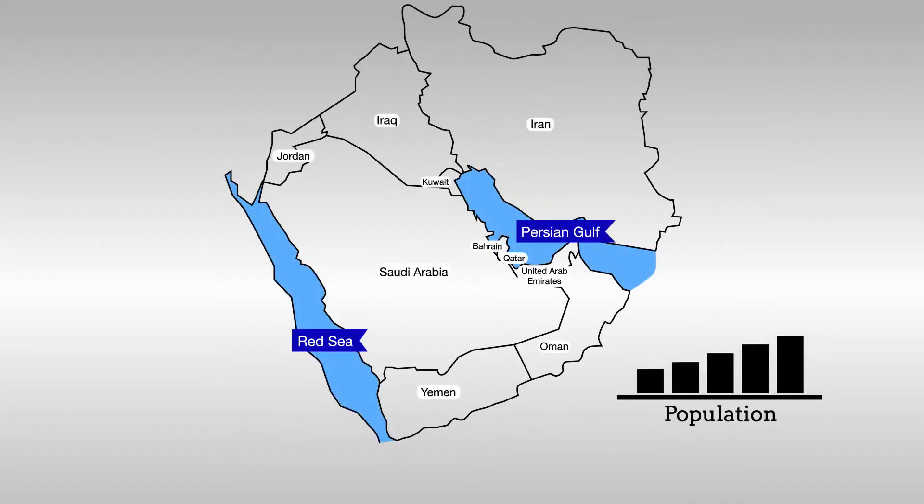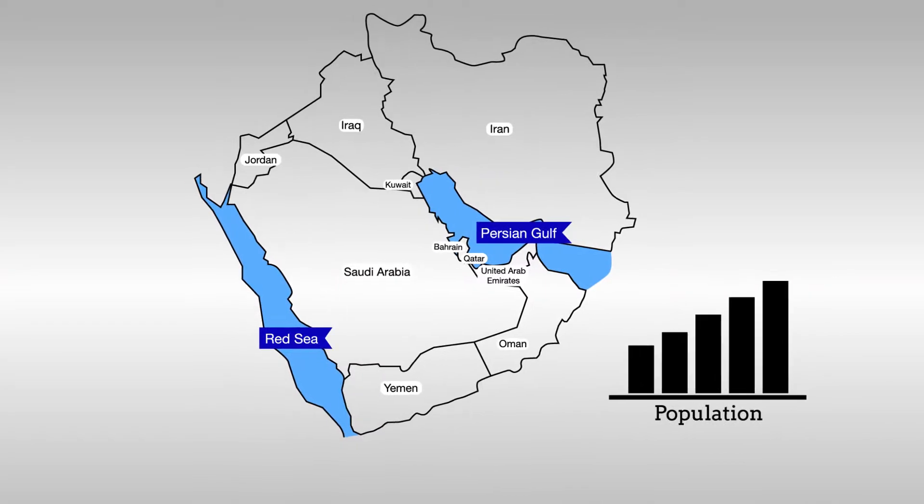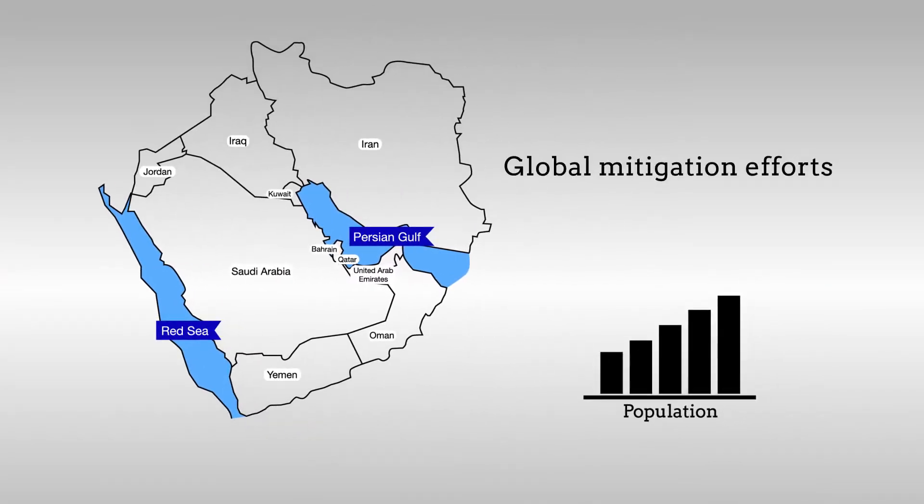With a rapidly increasing population in southwest Asia, the scientists highlight the benefits that global mitigation efforts could provide in fostering a habitable environment for the future. The most important being that the maximum wet bulb temperature would not exceed the 35 degrees Celsius threshold in any location examined in their study.